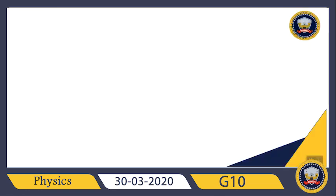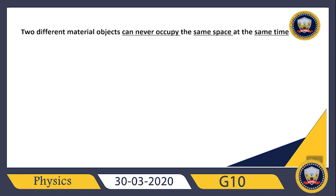So first of all, let me ask you a question. Can two objects or two materials occupy the same place at the same time? No, we can't. So two different material objects can never occupy the same space at the same time. Maybe at different times you can put a book here and later remove it and put another thing, but at the same time you cannot put two different objects in the same space.